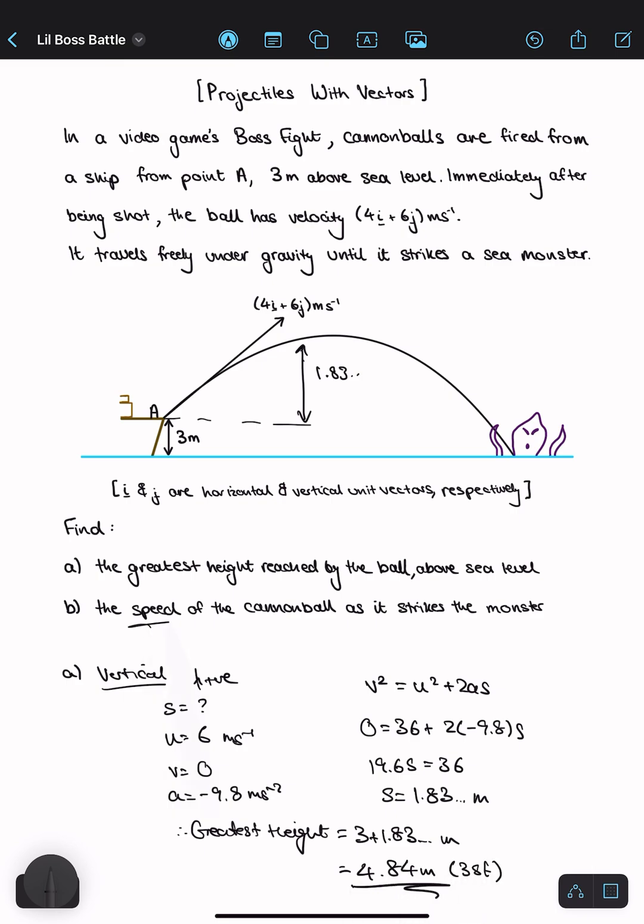Part B, the speed of the cannonball as it strikes the monster. This word should jump out at you because it is a scalar quantity. So we need the vertical and horizontal components of the velocity at the end of the motion.